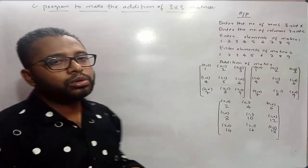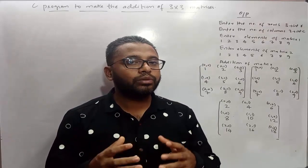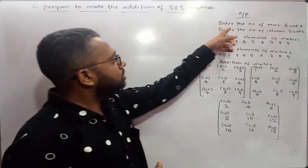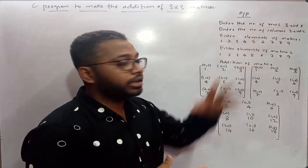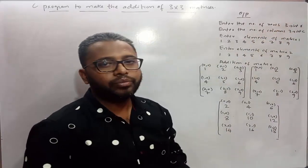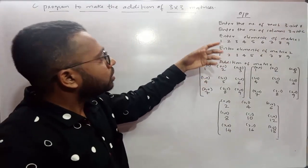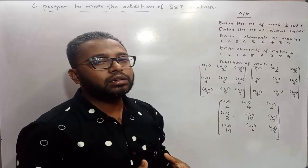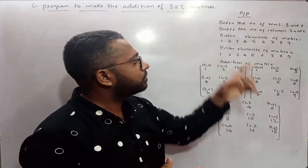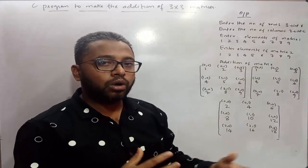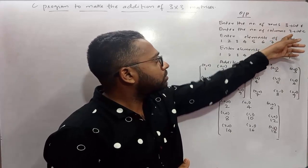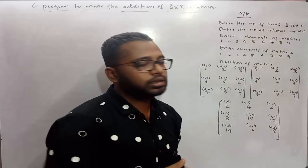Here I have already written down the output of this program, and with the help of this output we will try to understand how many variables are required and how we can perform the addition of two matrices. When the program gets executed it asks the user to enter the number of rows — I will enter 3. You must create a variable to hold that value; I have created an integer variable r. Then it will ask you to enter the number of columns. Both the rows and columns values must be the same, so to store the column value I have created integer variable c.